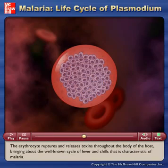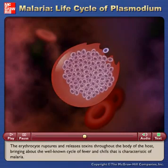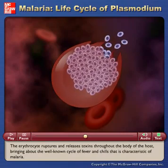The erythrocyte ruptures and releases toxins throughout the body of the host, bringing about the well-known cycle of fever and chills that is characteristic of malaria.